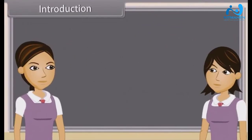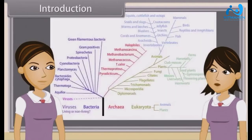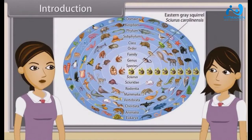Do you know what biological classification is? Biological classification, or scientific classification in biology, is a method by which biologists group and categorize organisms by biological type, such as genus or species. Modern biological classification has its roots in the work of Carolus Linnaeus, who grouped species according to shared physical characteristics. These groupings have since been revised to improve consistency with the Darwinian principle of common descent.